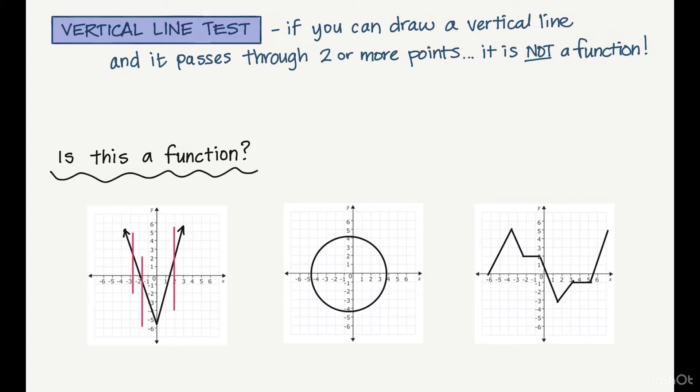For my first one, I'm going to just draw a bunch of different vertical lines. If you can see, each time it only passes through once, which means yes, this first one is a function. It passed the test. Now for the circle, I'll draw a line and look, automatically it's hitting it twice. So no, this middle one is not a function. Our final one, I could just draw any vertical lines anywhere. And as you can tell, each time it's hitting it once. So yes, this one is a function as well.